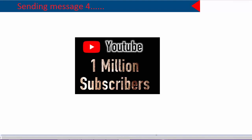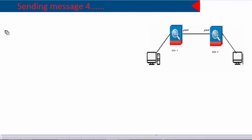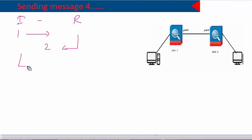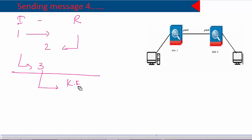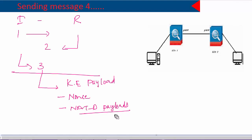In this video we are going to see what happens during message 4. So far we have seen messages 1, 2, and 3 of IKE exchange. The initiator sends the first message, the responder sends the second packet, and the initiator then sends the third message. In the third packet, it sends a key exchange payload, a nonce, and NATD payloads — NATD payloads will only be present if NATD was enabled in the first and second packet.